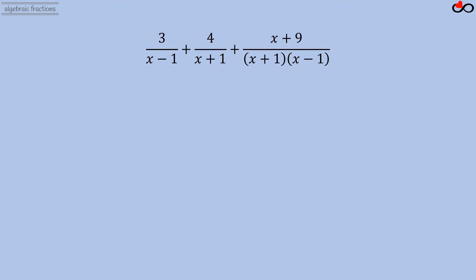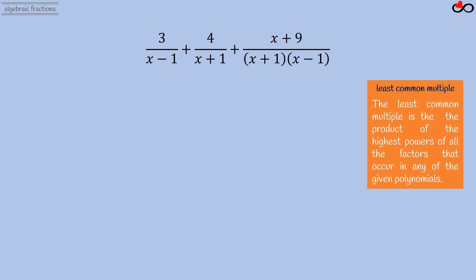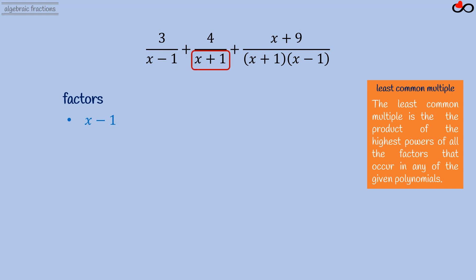We find the least common multiple of the denominators to simplify the expression. The least common multiple is the product of the highest powers of all the factors that occur in any of the given polynomials. Listing all factors: the first denominator has factor (x minus 1); the second denominator has factor (x plus 1); the third denominator has factors (x plus 1) and (x minus 1).